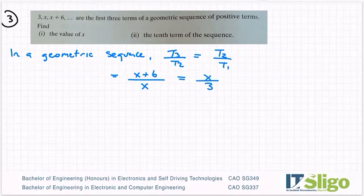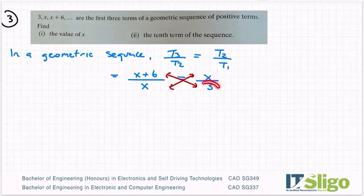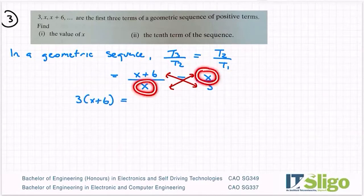Okay, the equals sits in the middle. So the easiest way to do it is to cross multiply. And you can see me drawing in the red x's. So that means, follow the cross: 3 times x plus 6 is equal to x times x.